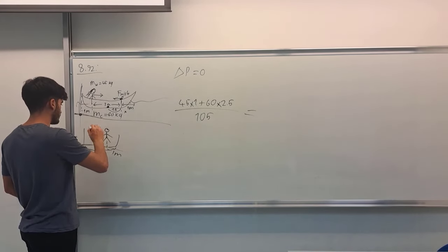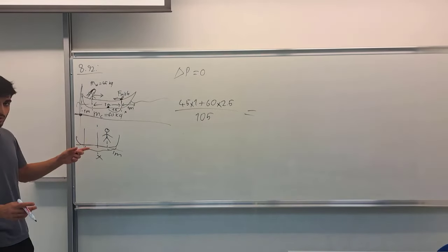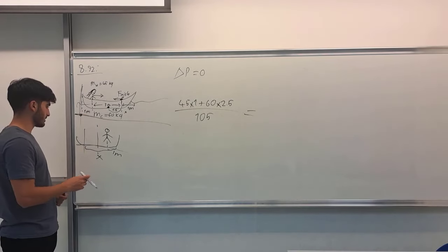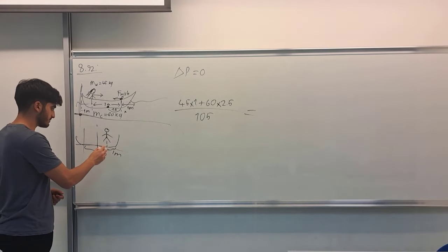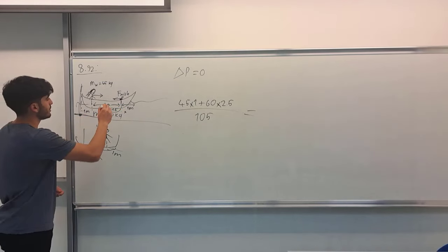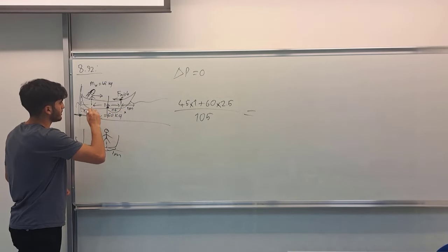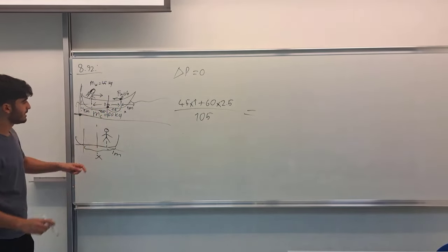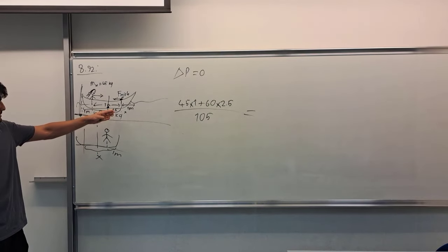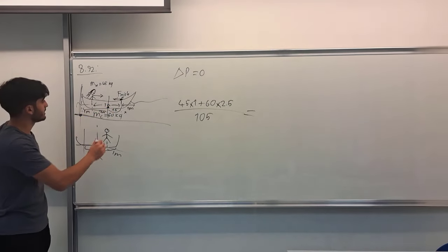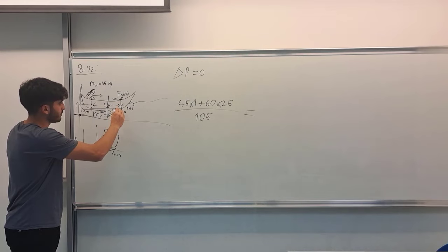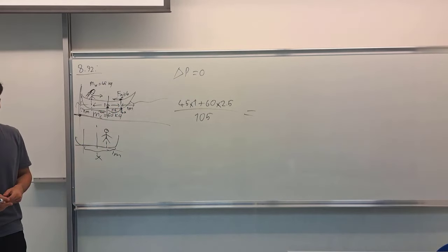And the center of mass of this canoe is how much away from the origin. So if I call this distance x, I know it's here, so this is 2.5 meters ahead and this is 1.5 meters ahead. Sorry, this is here 4 meters, so this is 1.5 meters from the end.